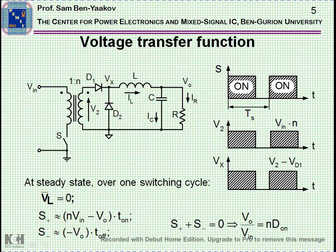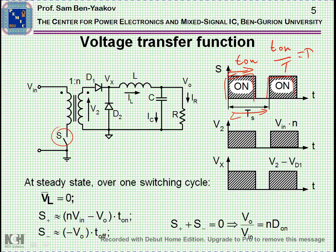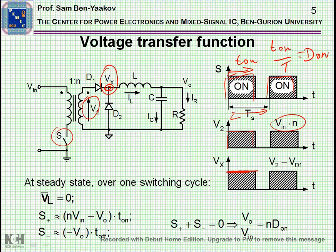Let's have a deeper look into the operation of this output section. The switch is turned on periodically. This is the period, and this would be the on time, T_on. T_on over the period is defined by the duty cycle. As the switch turns on, we'll find a voltage V2 at the secondary, which is N times VIN, depending on the turns ratio. Let's look at the voltage VX at this junction. When the switch is on, we're going to have the secondary voltage V2, which is N times VIN.